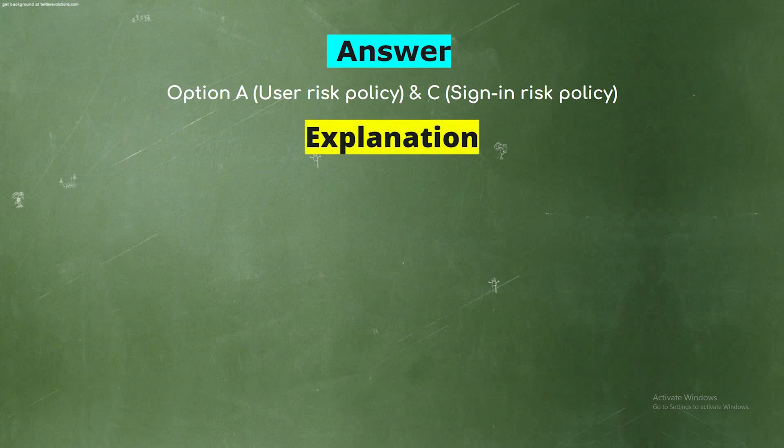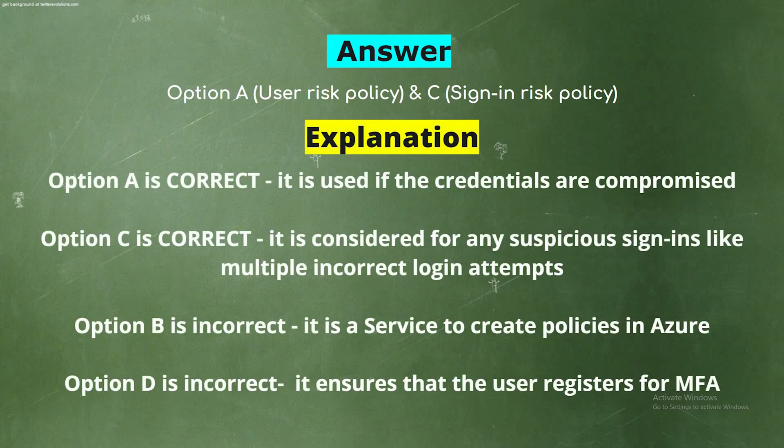Explanation: Option A is correct — it is used if the credentials are compromised. Option C is correct — it is considered for any suspicious sign-ins like multiple incorrect login attempts. Option B is incorrect — it is a service to create policies in Azure. Option D is incorrect — it ensures that the user registers for MFA.